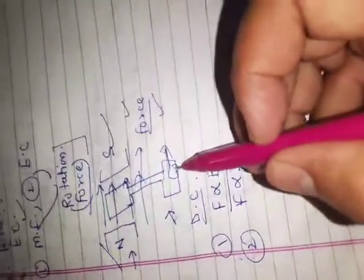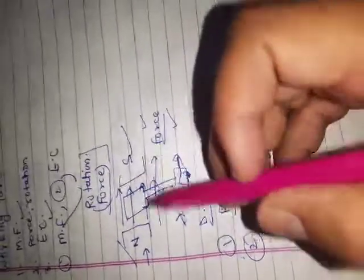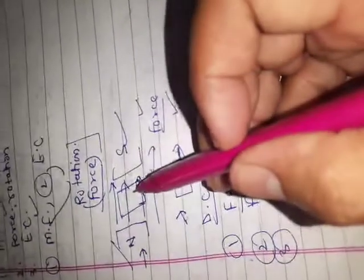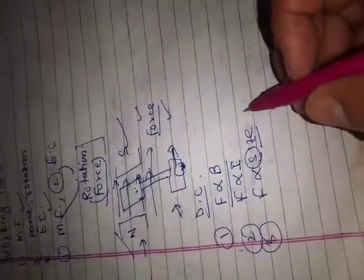Number two: this force is directly proportional to the current. If we increase the current value, we will get more rotation, more force. Third thing: size — the size of this conductor or iron piece. If its size is smaller, you will get less rotation. If you increase its size, you will get more rotation. This is the simple explanation.